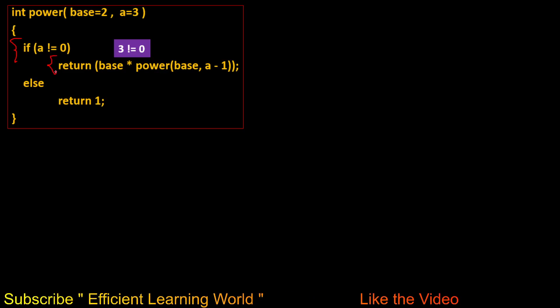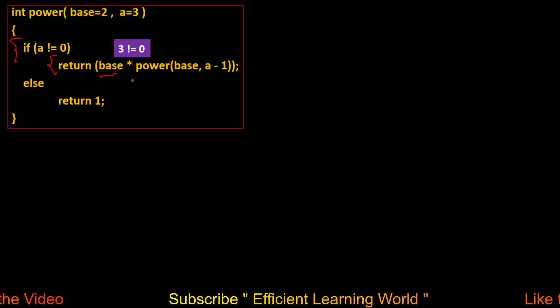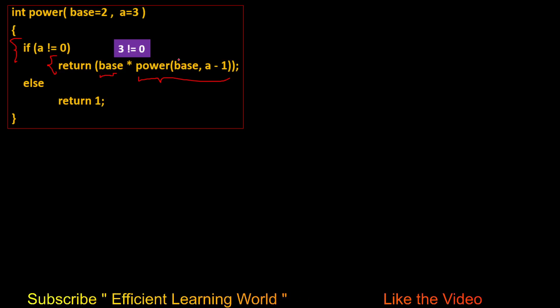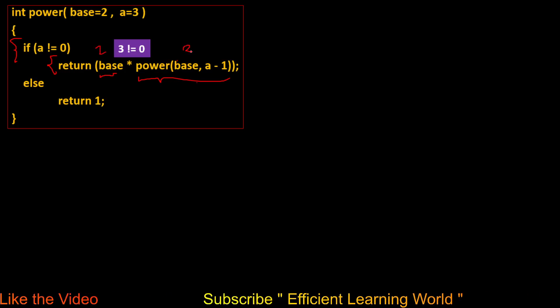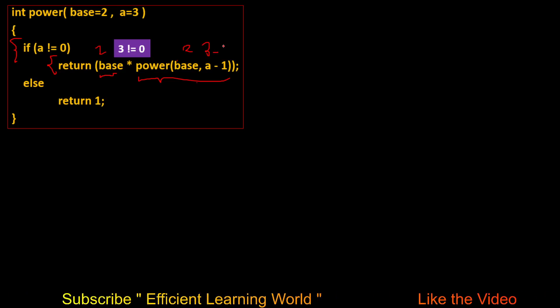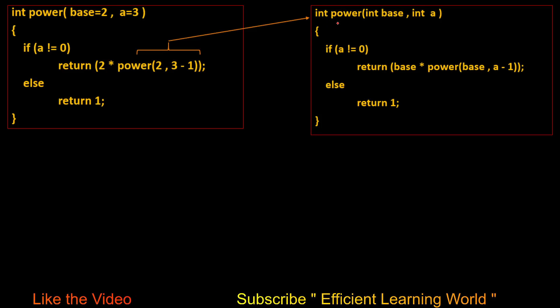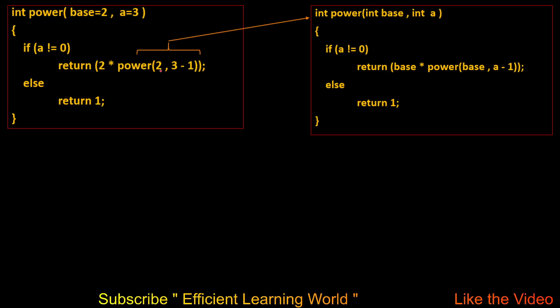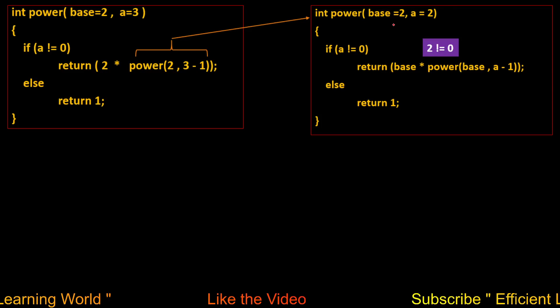Inside the if body, we return base multiplied by a recursive call: power(base, a-1). Since base=2 and a=3, this calls power(2, 3-1) = power(2, 2). The compiler then enters this new function call and again checks the condition: is a≠0? Since a=2 and 2≠0, the condition is true and the if body executes again.